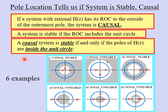In the first example, the ROC is outside the outermost pole, so the system is causal. The ROC also includes the unit circle, so the system is stable. In the second example, the ROC is again outside the outermost pole, so the system is causal. However, the ROC does not include the unit circle, so the system is unstable.